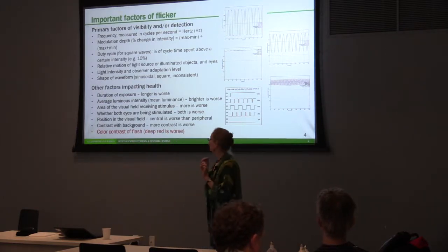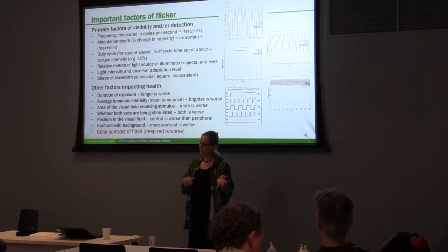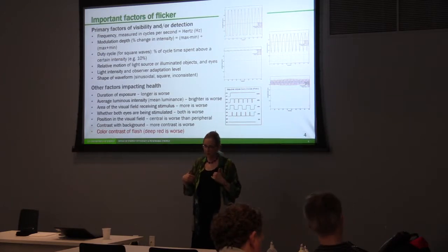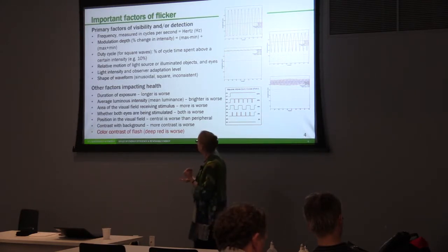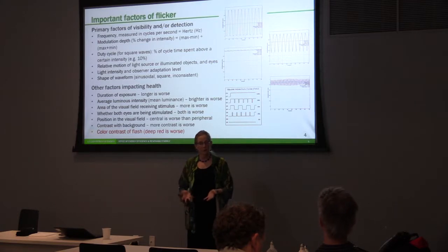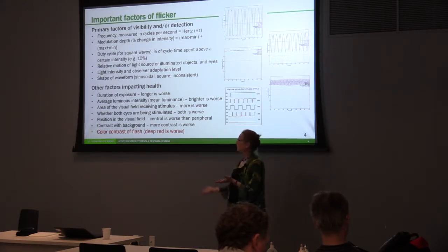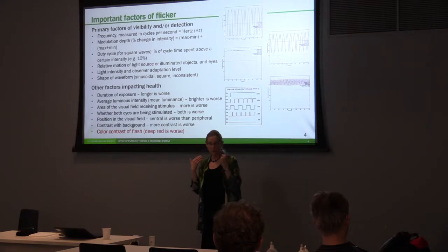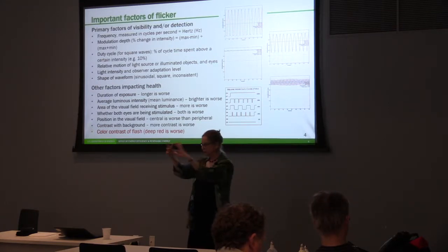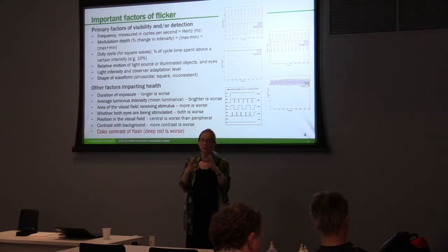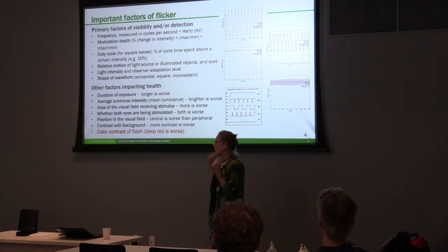Here are the factors that will impact health. If you're exposed to a flickering light source for a longer period of time, it's more likely to cause some kind of physiological response. If it's brighter, more likely to give you a physiological response. If the area of the visual field being stimulated is larger, that's more likely to cause a response. If both eyes are being stimulated, that's worse than if one eye is being stimulated. And if it's located near your center of view, it's more likely to cause a neurological response.